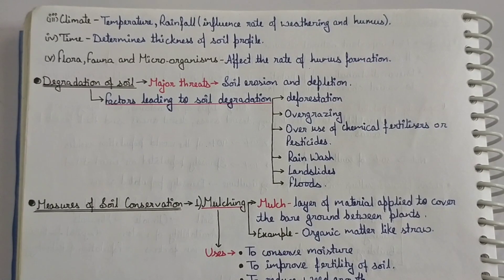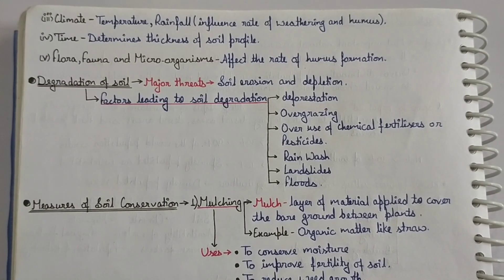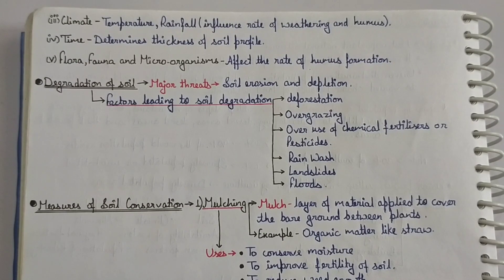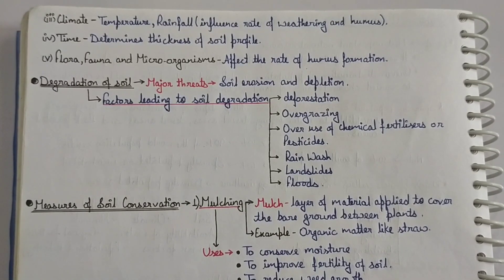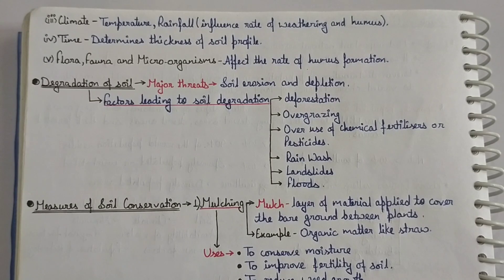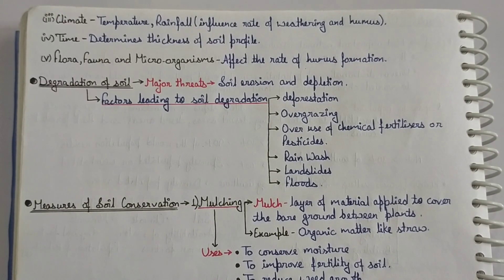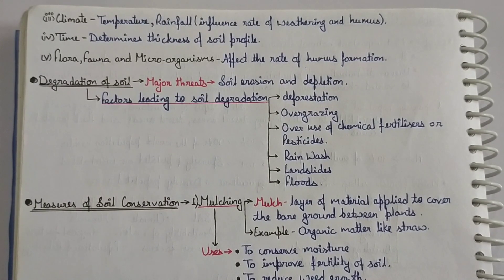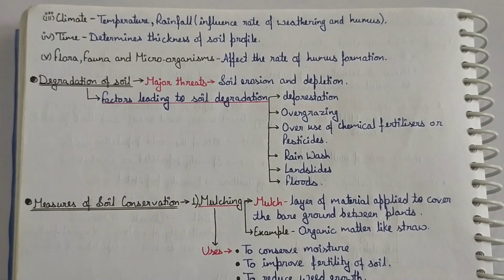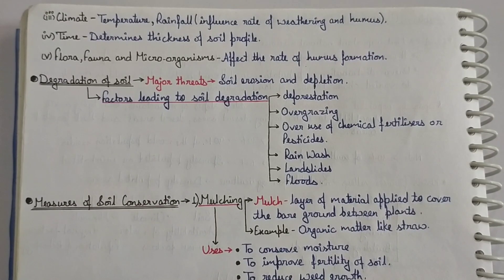Next point is degradation of soil. Soil degradation is the loss of natural fertility and productive capacity of the soil. The main causes include soil erosion and soil depletion. Factors leading to soil degradation are: first, deforestation — the cutting down of trees at a large scale, which leads to soil degradation; second, overgrazing.